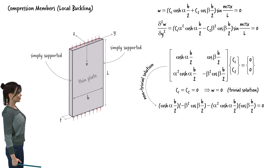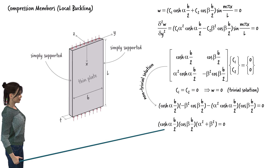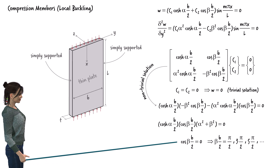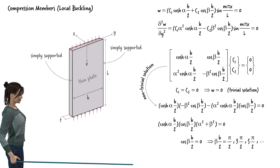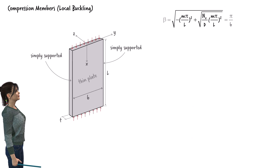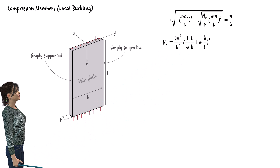The determinant expression simplifies such that since one term cannot be 0 and another term is always greater than or equal to 1, for the determinant to be 0 a specific term must be 0. For the cosine of beta times b over 2 to be 0, beta times b over 2 must be an odd multiple of pi over 2. Using the smallest odd multiple gives beta equals pi over b. Solving for N_x, and since N_x is force per unit width, we can rewrite it in terms of F_cr (buckling compressive stress) and plate thickness t.